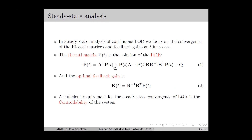Now, in this equation, if P(t) converges to a constant matrix, then the derivative P-dot should be 0. And also, if P(t) converges to a constant matrix, then K(t) also converges to a fixed matrix. A sufficient requirement for the steady-state convergence of LQR is the controllability of the system, which we will discuss next.